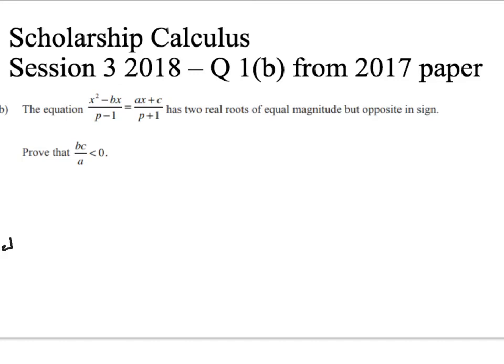Here's the question. We've got this equation which looks like a quadratic just in slightly odd form, and it's got two real roots of equal magnitude but opposite in sign, so we have to prove that bc over a is negative. Looking at the original expression we can see that we've got p minus 1 and p plus 1, but we don't have anything with a p in it in what I'm trying to prove. So you might think that we're trying to eliminate p from something in here.